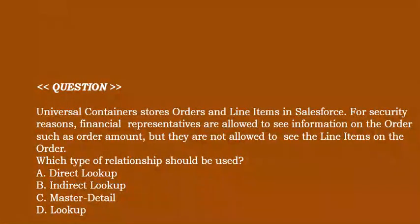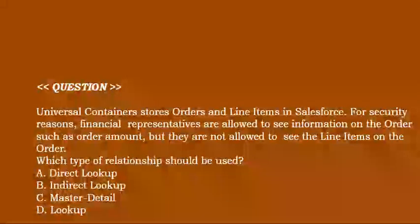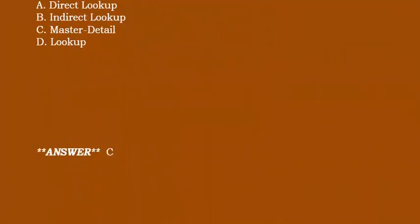Universal Containers stores orders and line items in Salesforce. For security reasons, financial representatives are allowed to see information on the order such as order amount, but they are not allowed to see the line items on the order. Which type of relationship should be used? Option A: direct lookup. Option B: indirect lookup. Option C: master detail. Option D: lookup. Correct answer is Option C.